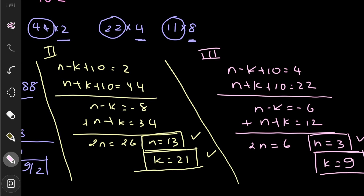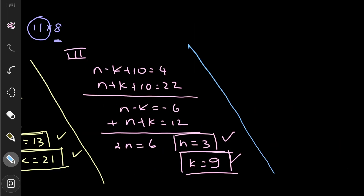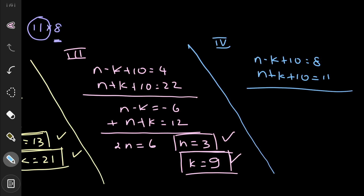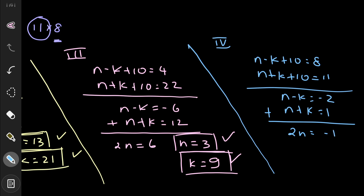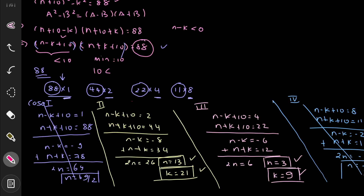Case 4: 11 × 8. We set (n − k + 10) = 8 and (n + k + 10) = 11, giving n − k = −2 and n + k = 1. Adding: 2n = −1, so n = −1/2. This is not a positive integer, so Case 4 is also rejected.